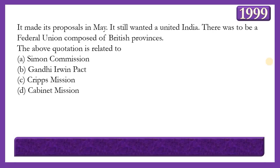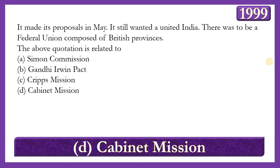Next question: 'It made its proposals in May. It still wanted a united India. There was to be a federal union composed of British provinces.' To which mission or event do these statements refer? Options: Simon Commission, Gandhi-Irwin Pact, Cripps Mission, or the Cabinet Mission. The answer is option D — the Cabinet Mission — whose proposals came in May 1946, opposed the demand for Pakistan, and supported a united India composed of British provinces.